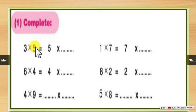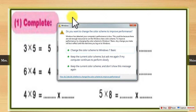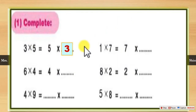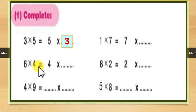Three times five equals five times three. We just said in the previous slide that when we multiply and swap the two numbers, the result doesn't change — multiplication is commutative. So three times five is the same as five times three. After that, six times four is the same as four times six. Next, four times nine equals nine times four.